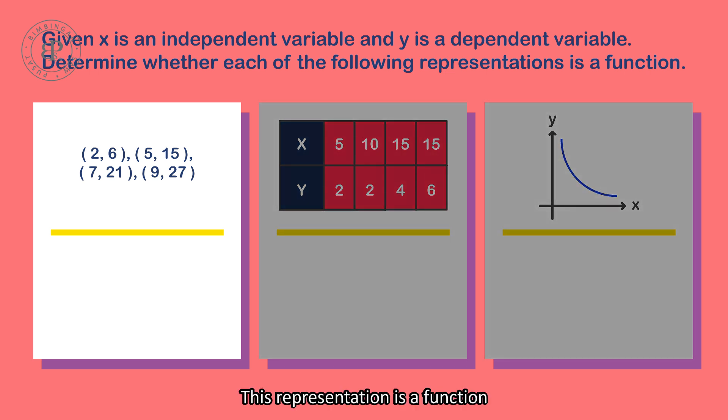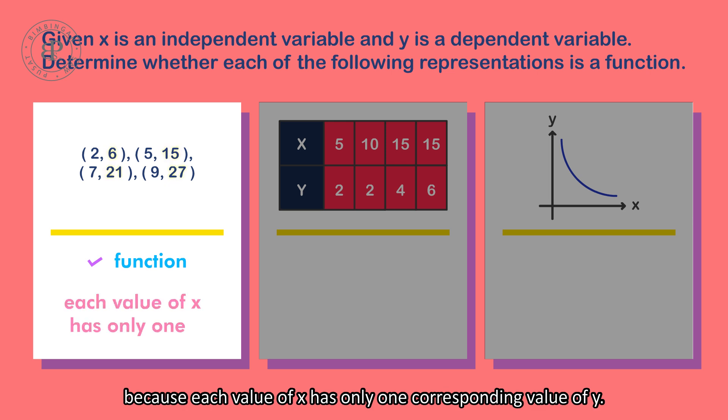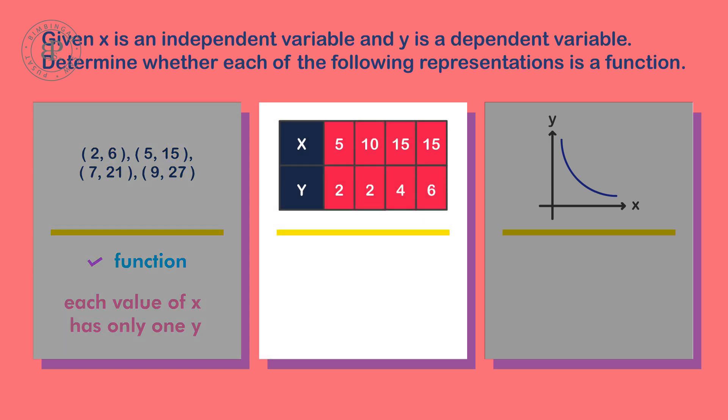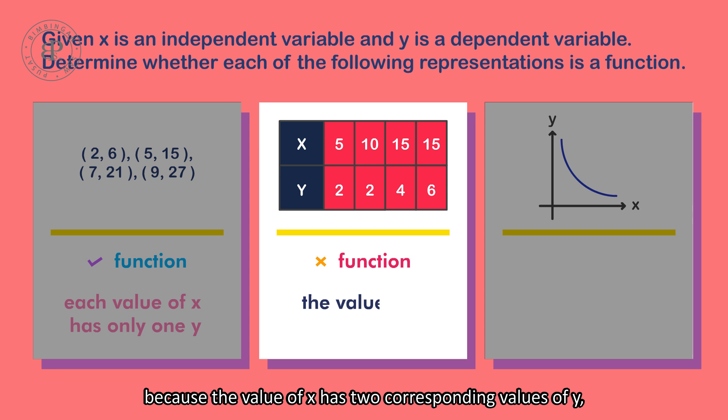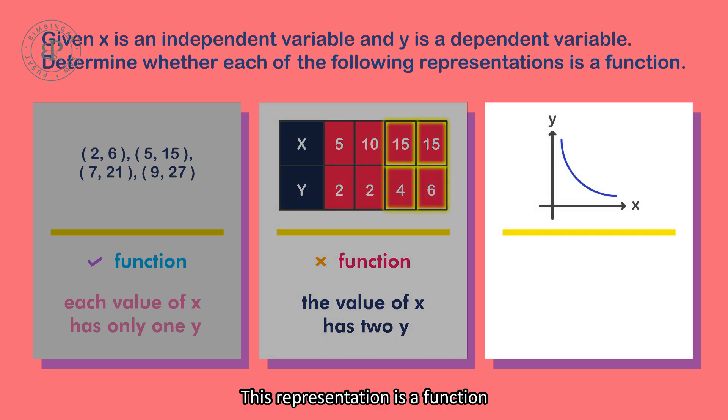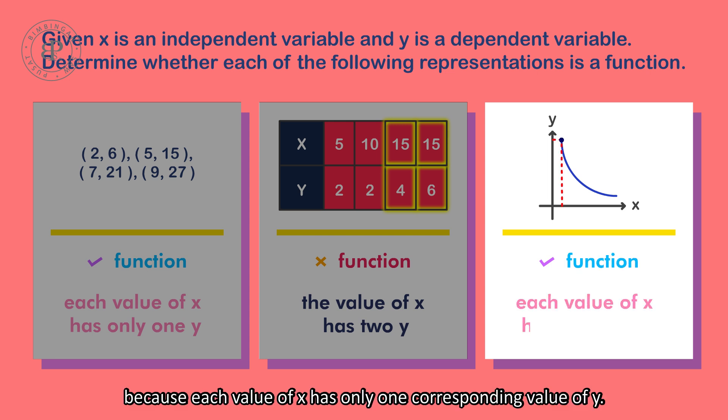This representation is a function because each value of x has only one corresponding value of y. This representation is not a function because the value of x has two corresponding values of y. That is, when x equals 15, y equals to 4 and 6. This representation is a function because each value of x has only one corresponding value of y.